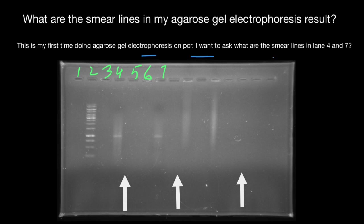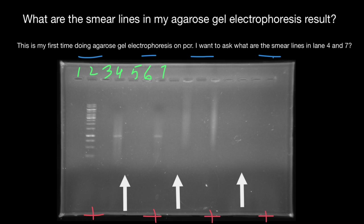So it moves toward the negative charge, which is on this side. This is the negative electrode here, and the positive electrode would be here. Positively charged ethidium bromide would move in the direction of the negatively charged electrode, and negatively charged DNA would move toward the positive electrode — that is the direction in which DNA moves.